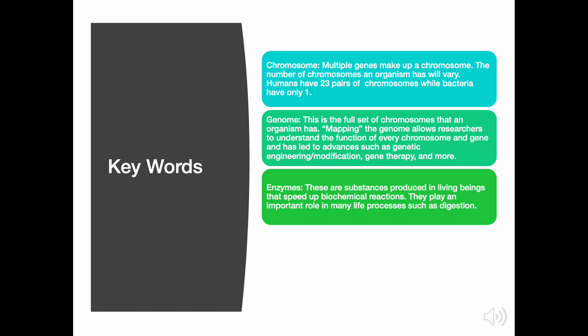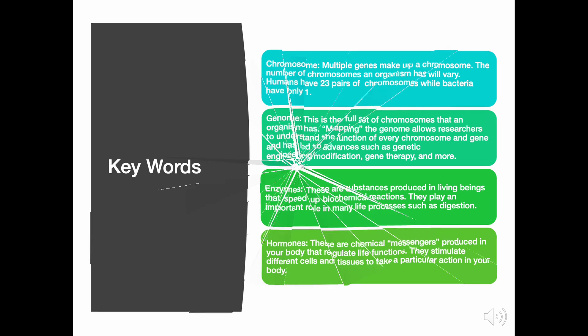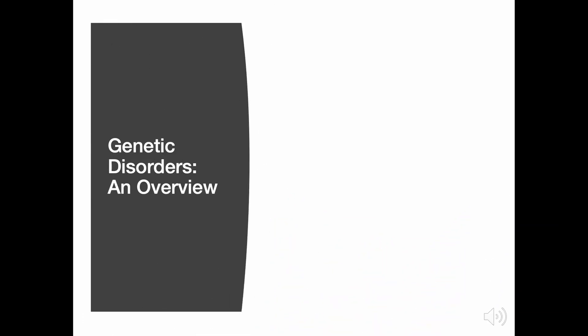Hormones are chemical messengers produced in your body that regulate life functions. They stimulate different cells and tissues to take particular action in your body. Now let's look at genetic disorders.